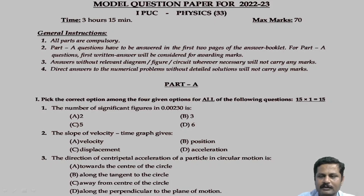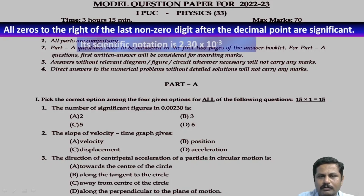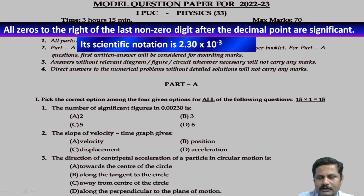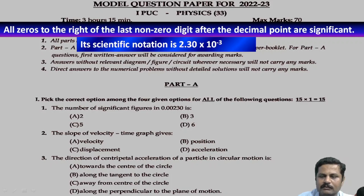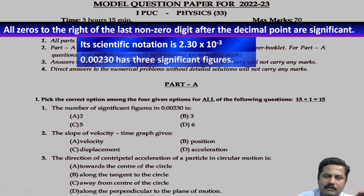The number of significant figures in 0.00230 is. We have to follow the rule or represent it in scientific notation. This number is 2.30 into 10 raised to minus 3. By writing in scientific notation without rounding up, it becomes 2.30 into 10 raised to minus 3. So by looking at this we can decide the significant figures — that is 1, 2, 3.